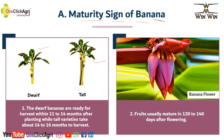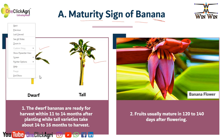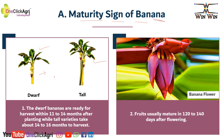To attain maturity, the first sign is the months required. For the dwarf plant, it takes nearly about eleven to fourteen months from planting. And the tall plants will take nearly about fourteen to sixteen months to get harvest. The fruit usually matures within 120 to 140 days after flowering.